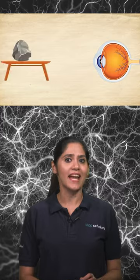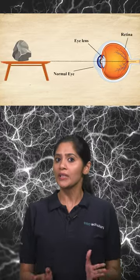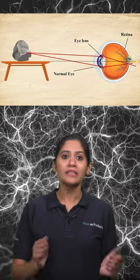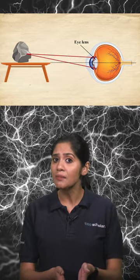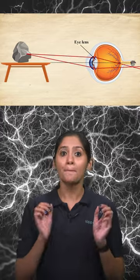The first diagram here shows a normal eye, so the image is formed on the retina. Now for a hypermetropic eye, the light rays coming from the nearby object converge behind the retina.